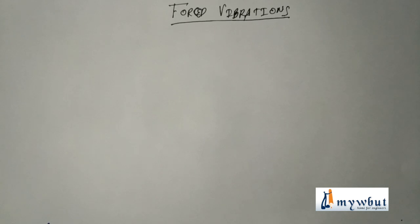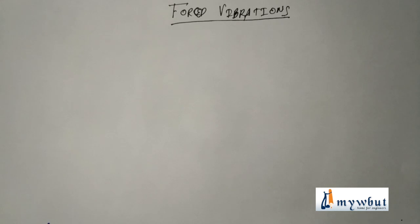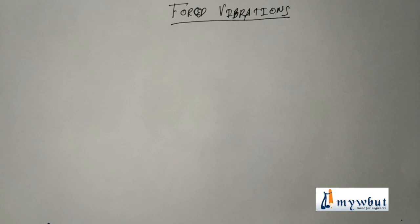Welcome to the third and last video of the first module on oscillations. Previously we studied simple harmonic motion (SHM) and in part 2 we studied damped vibrations. Now in this video we will continue with forced vibrations. The amplitude of oscillations for a damped oscillatory motion decreases with time due to loss of energy overcoming resistive forces. But if an external periodic force is supplied to the system to make up for the losses, the amplitude does not decay and the body will oscillate regularly. This kind of vibration is known as forced vibration.